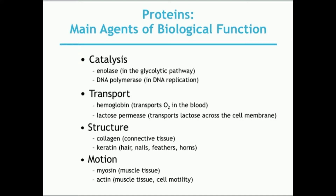Proteins also serve as structural components of the body — for example, in connective tissue and extracellular matrices. Collagen is a great example: it gives bones tensile strength and prevents them from shattering, and it's also found in skin. Keratin is a major component of hair and nails in humans. In other organisms, such as birds, keratin is found in feathers, and in rhinoceroses, it is found in their horns.